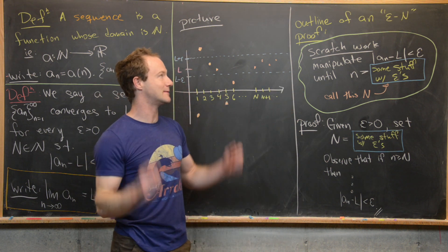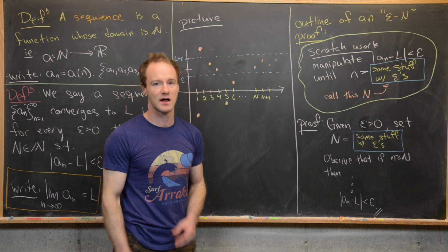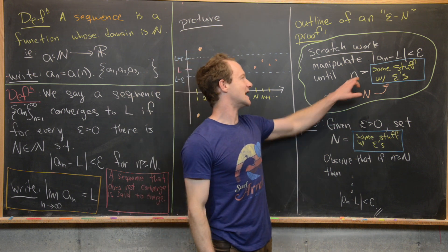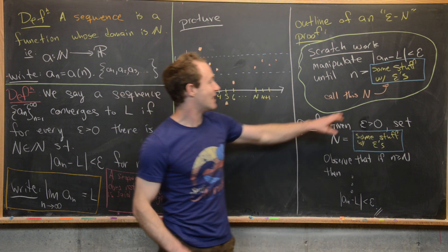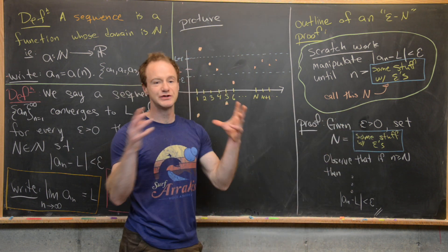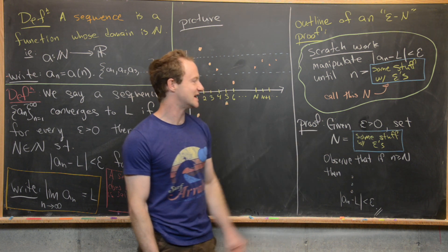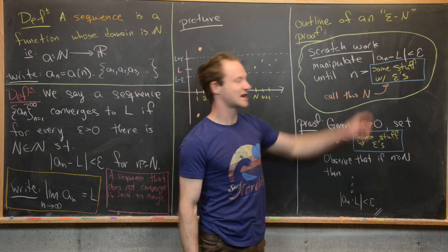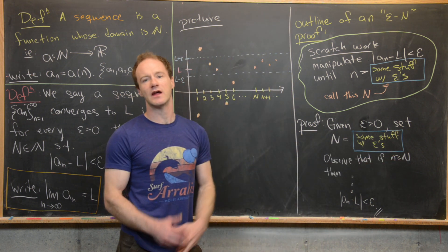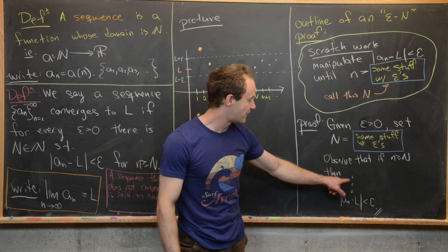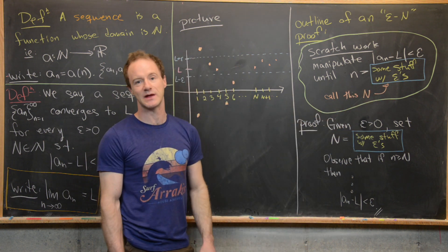To show that a sequence converges to L, we use a so-called epsilon-N proof. You always start with scratch work, beginning with the goal: the absolute value of a_n minus L is less than epsilon. You manipulate that until you get n by itself, finding that n is greater than some expression involving epsilon — that expression is what you'll call capital N. Then in the formal proof, given epsilon greater than 0, you set N equal to that expression from the scratch work, and then observe that if little n is bigger than capital N, you can reverse all those steps to conclude that the absolute value of a_n minus L is less than epsilon.